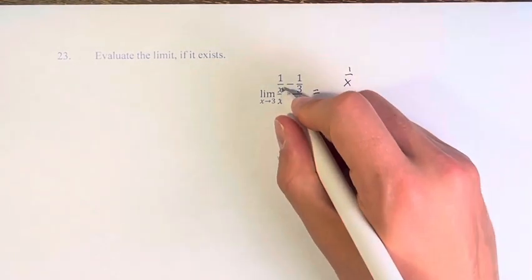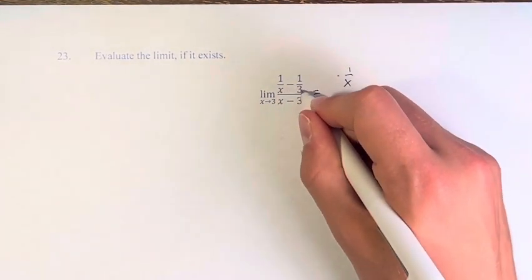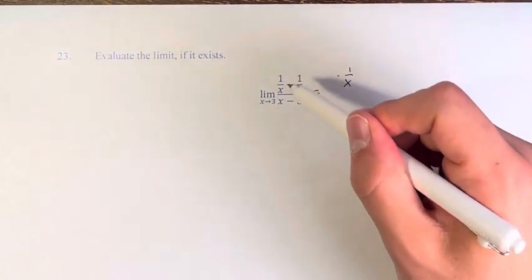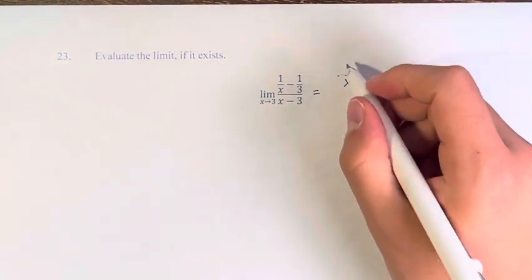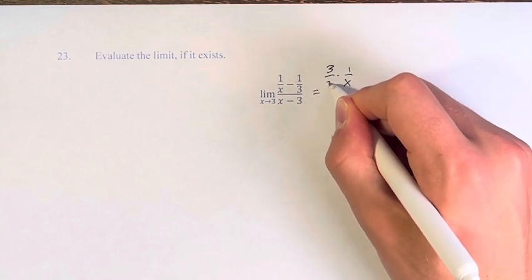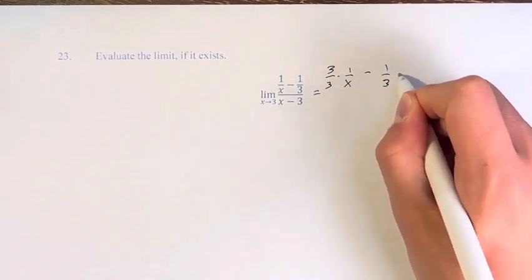So we have to get a common denominator, so we're going to multiply this one by this denominator. We're going to multiply this fraction by this denominator. So 1 over x gets multiplied by 3 over 3, and 1 over 3 gets multiplied by x over x.